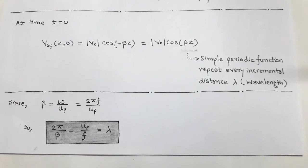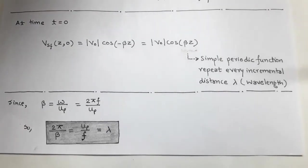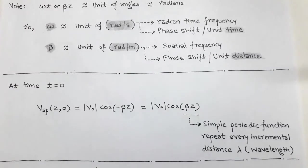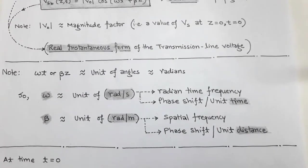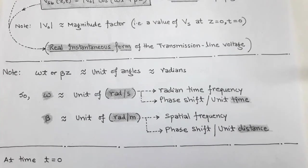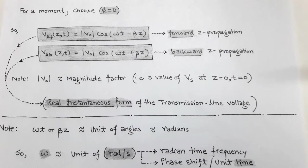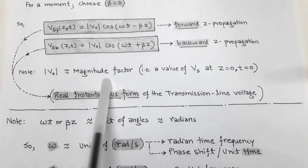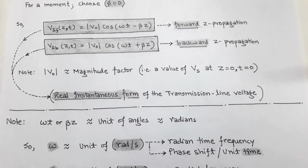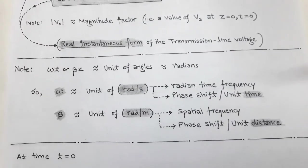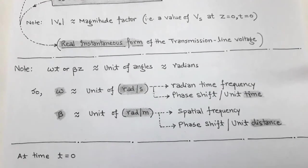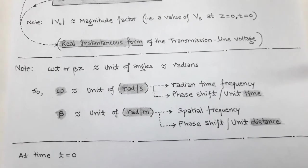This is the frequency domain analysis of the sinusoidal wave on a transmission line for lossless propagation. We find a phase constant β = ω/U_P, where U_P is the phase velocity. A minus sign is for forward Z propagation and a positive sign for negative Z propagation. We also derived the real instantaneous form of the transmission line voltage, with ω in radians per second and β in radians per meter.